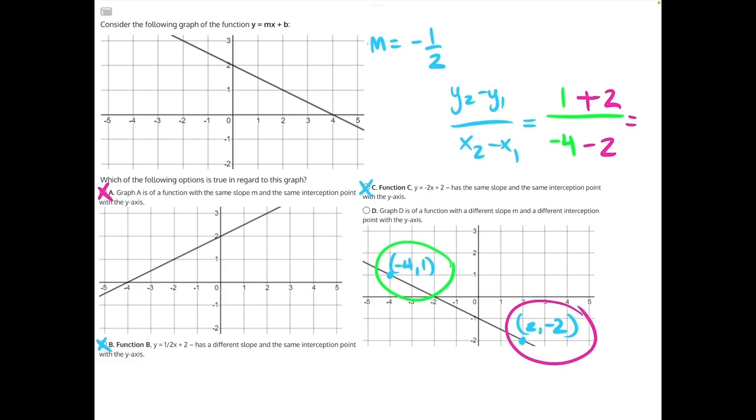Minus a negative means the same as adding a positive. So 1 plus 2 will give us 3, and negative 4 minus 2 will give us negative 6. When we simplify that, we'll pull out the greatest common factor from the top and bottom, which is 3, and that will give us negative 1 half.